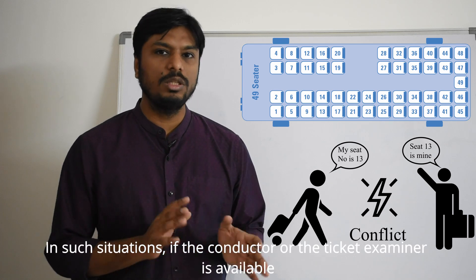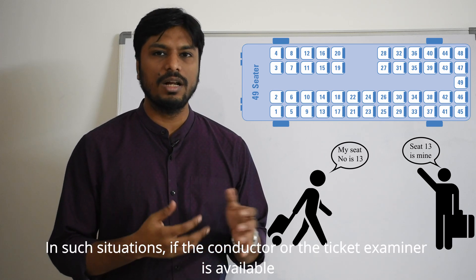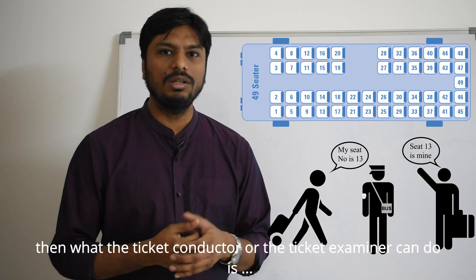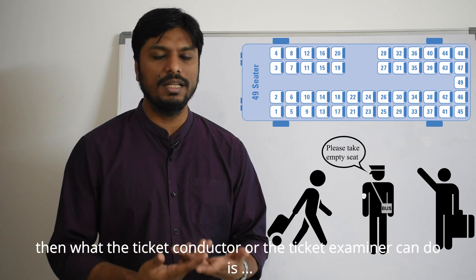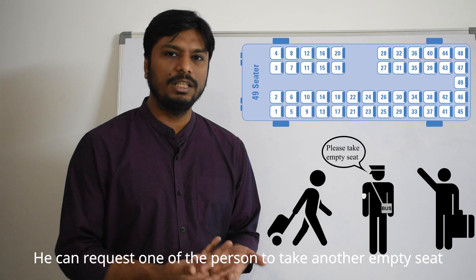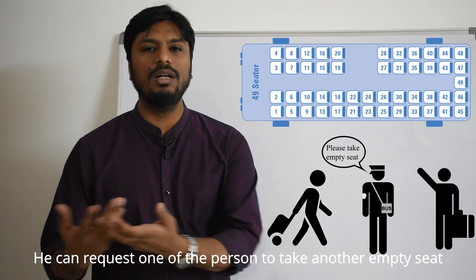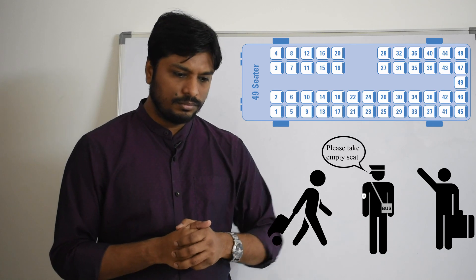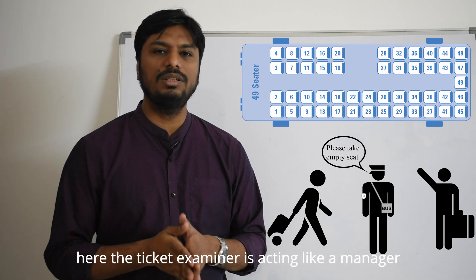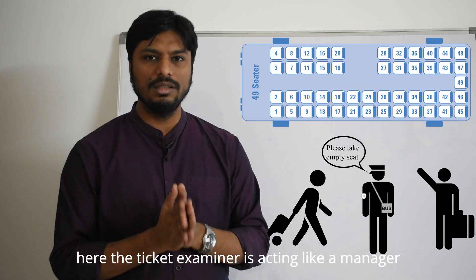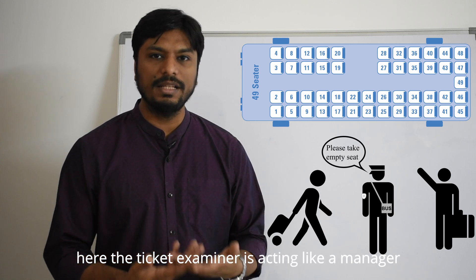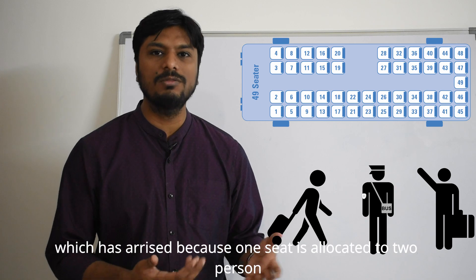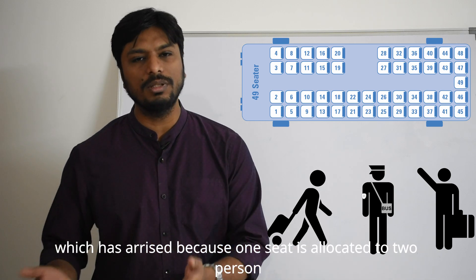In such situation if the conductor is available or if the ticket examiner is available, what the ticket conductor or the ticket examiner can do is he can request one of the person to take another empty seat. So here the examiner or the ticket conductor is acting as a manager who is trying to manage the conflict which has arisen because one seat is allocated to two persons.